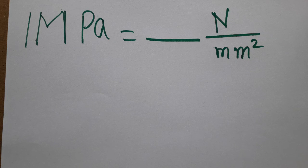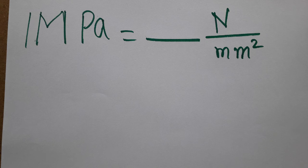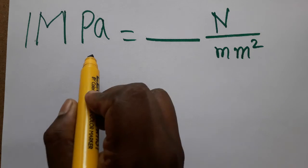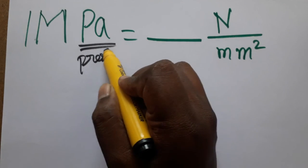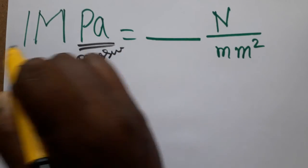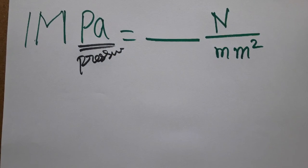Hello students. Today we are going to see: one Mega Pascal is equal to how many Newton per millimeter square. So Pascal is a unit of pressure, and Mega Pascal is a larger unit of it.